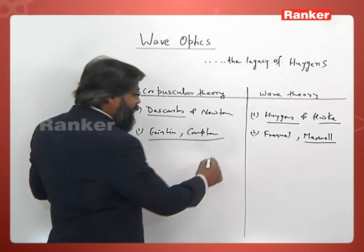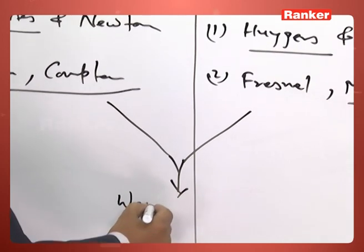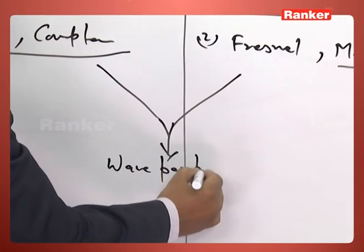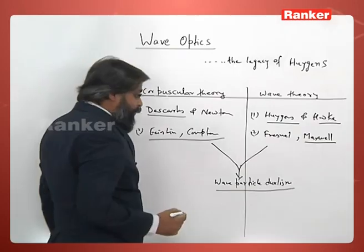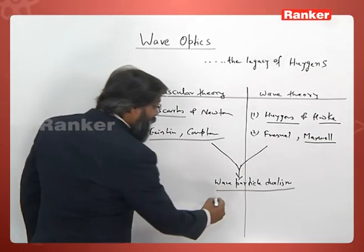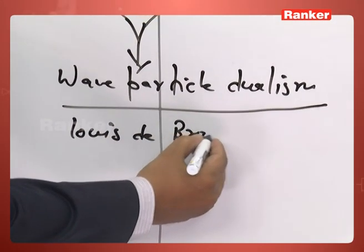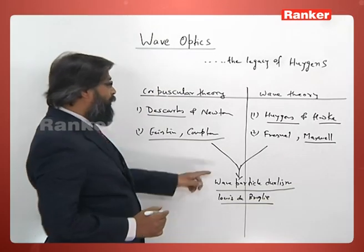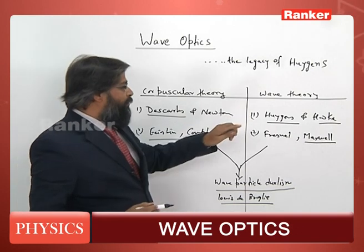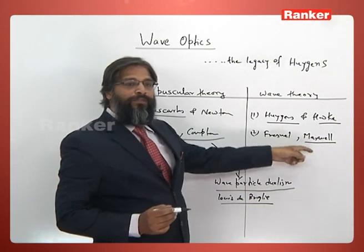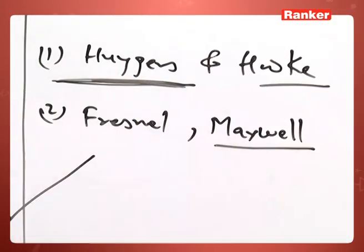Later on, both these ideas were mixed in wave-particle dualism, which we will study in modern physics. This was done by Louis de Broglie. In the previous chapter we completed Maxwell's electromagnetic waves, and now we will concentrate on the wave theory and the work done by Huygens.